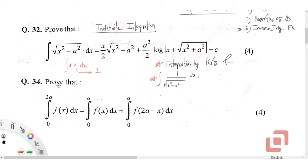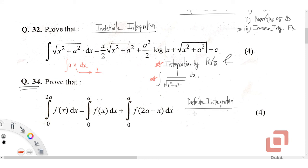Question 34 is also a proof problem, but it is based on a property of definite integrals. In the chapter on definite integrals in the textbook, there are five or six properties and their proofs. The property to prove is: ∫₀²ᵃ f(x) dx = ∫₀ᵃ f(x) dx + ∫₀ᵃ f(2a − x) dx.